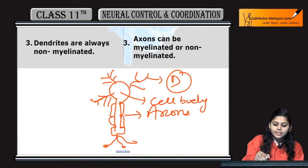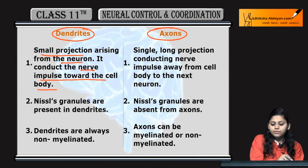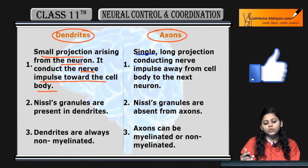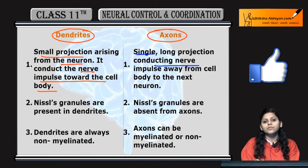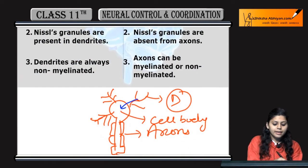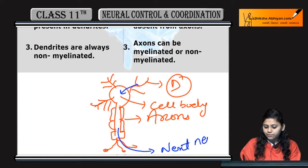Point 10: To dendrites kahaan le jaate hain information? Cell body ki taraf. Point 11: Axons single, long projection hain, conduct karti hain nerve impulses away from the cell body to the next neuron.